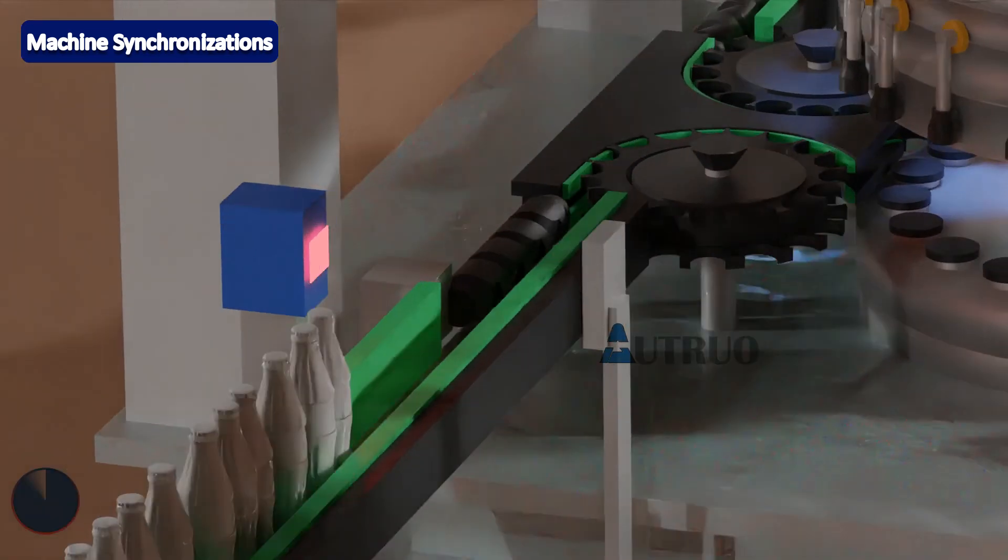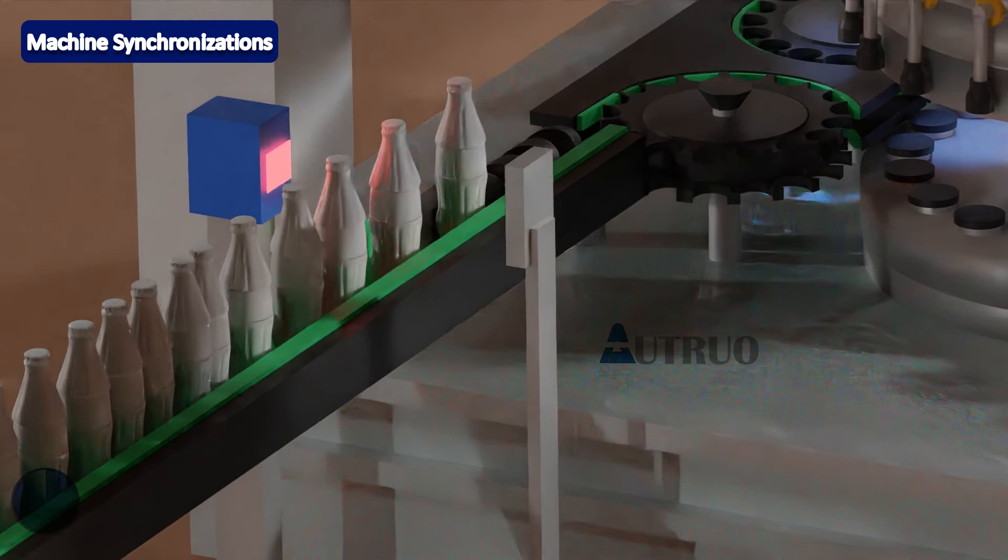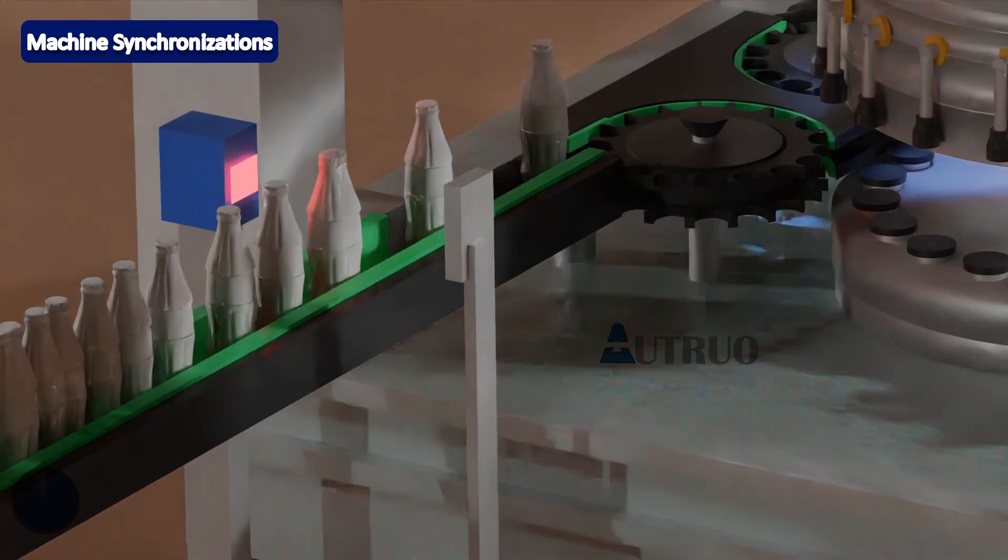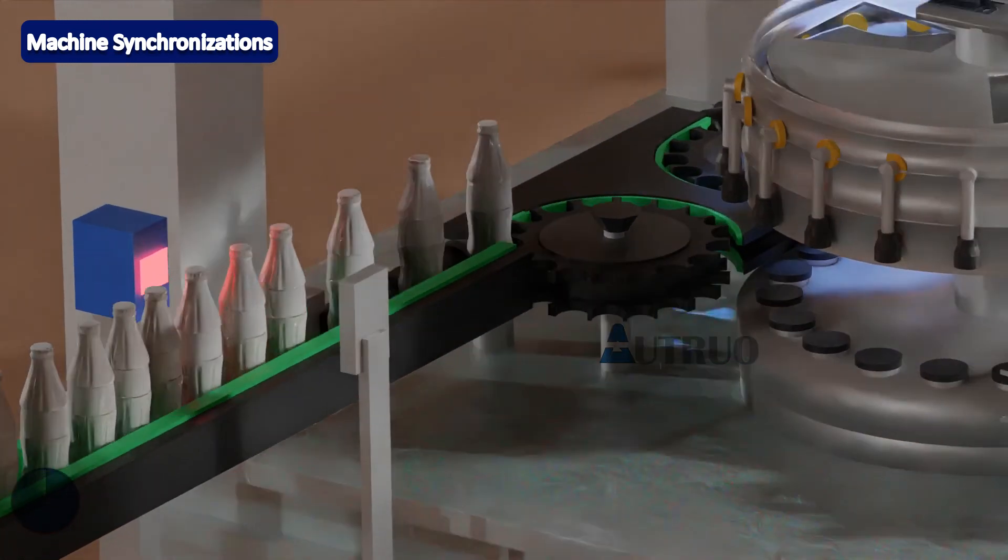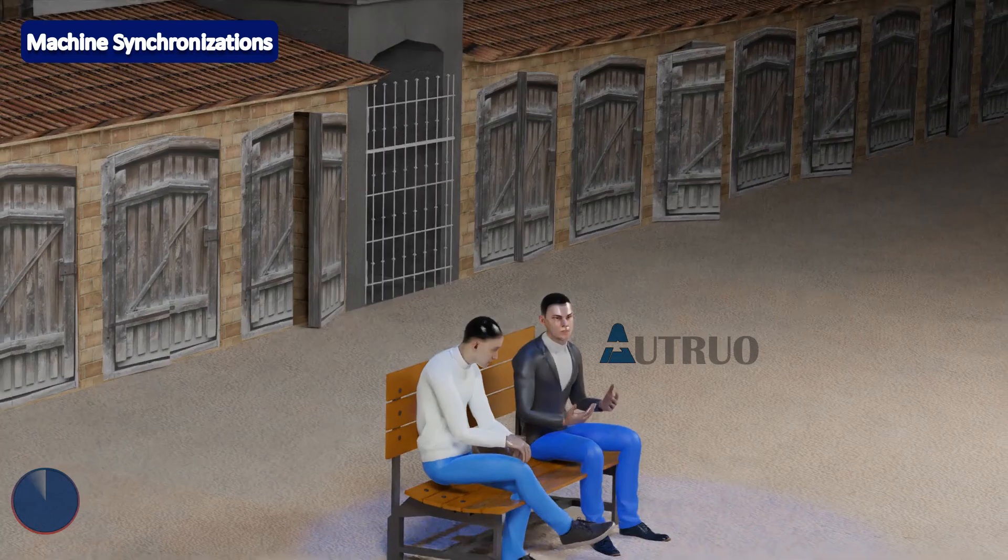Because if this feature is not there, it is either we have less bottles at infeed or bottle jam at infeed or at the discharge conveyor. Well, you are right to some extent.